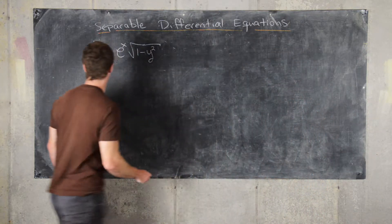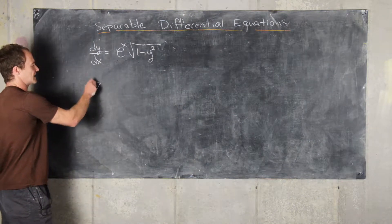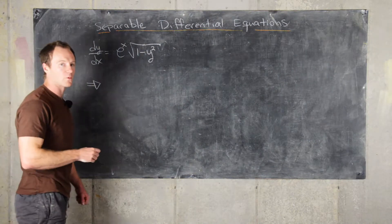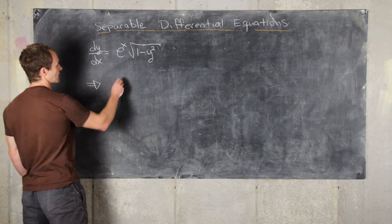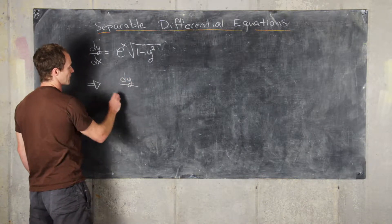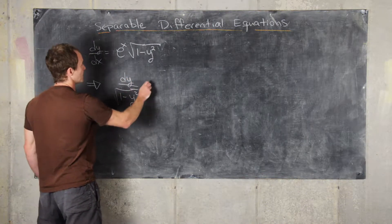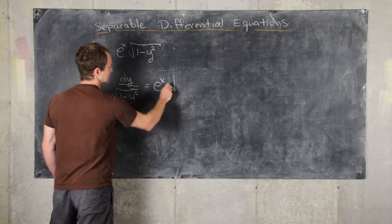So let's recall how to solve this. We can move all of the x's to one side of the equation and all of the y's to another side. So that'll give us dy over the square root of 1 minus y squared equals e to the x dx.